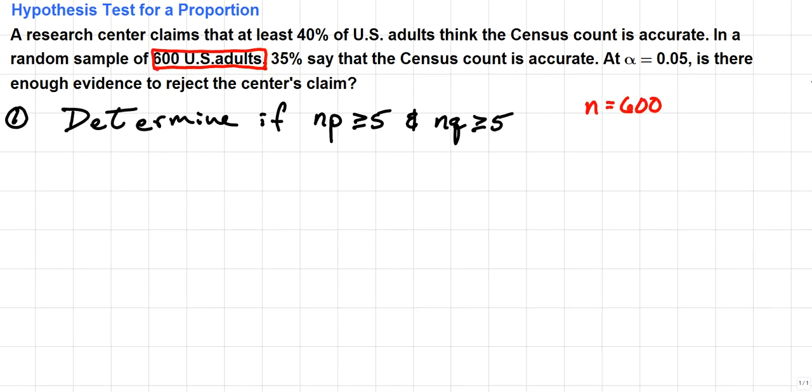P is going to be our percentage that say yes, the census count is accurate, so that's going to be 0.40. And then q is going to be equal to 1 minus p, which is 1 minus 0.40, which is 0.60.